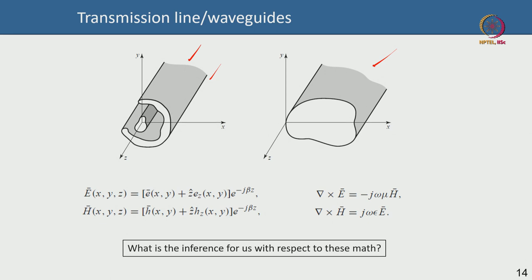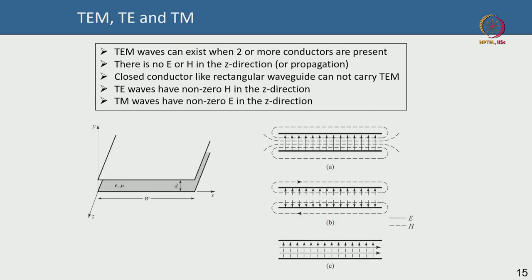In the substrate you bring other kinds of transmission lines which propagate the electromagnetic wave. Now it is very important to understand that electromagnetic waves can be of different nature. For instance, there is the pure TEM wave — transverse electromagnetic — where the electric field and the magnetic field are oscillating perpendicular to each other, and they are propagating along z.